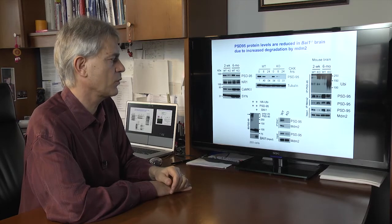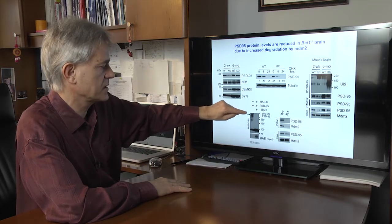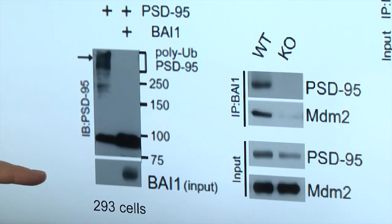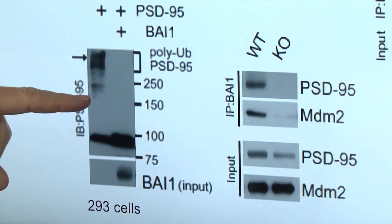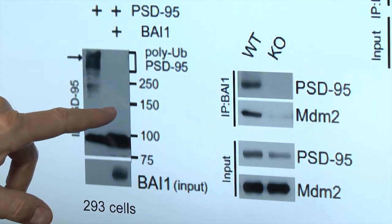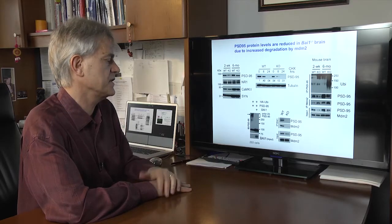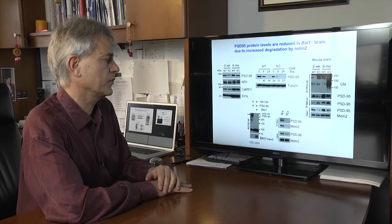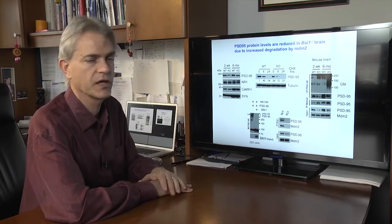BAI1 is able to prevent this from happening. This is an experiment in 293 neuronal cells. You see the polyubiquitination of PSD95, and when you bring BAI1 by transfection, this is completely prevented. This is because the E3 ubiquitin ligase MDM2 can normally degrade PSD95.